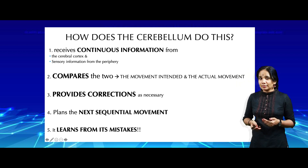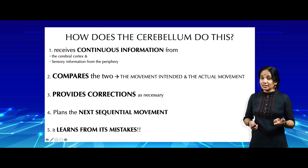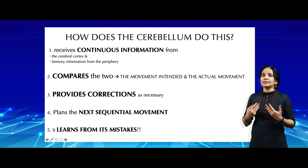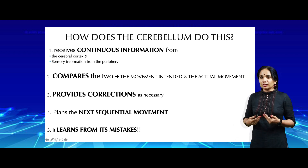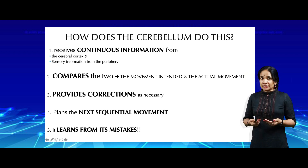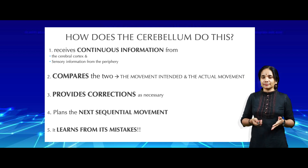What is unique about the cerebellum is that it learns from its mistakes. Once it sees that something has not been done properly, it provides corrections as and when necessary and plans the next sequential movement a fraction of a second early so that one set of movements will progress smoothly into the next. If one cerebral impulse is not strong enough to provide the desired movement, it has a feedback control which allows it to strengthen or decrease the strength of subsequent impulses so that the desired movement is achieved.